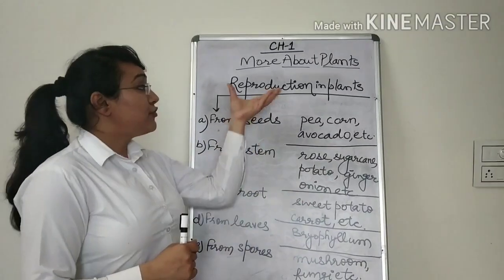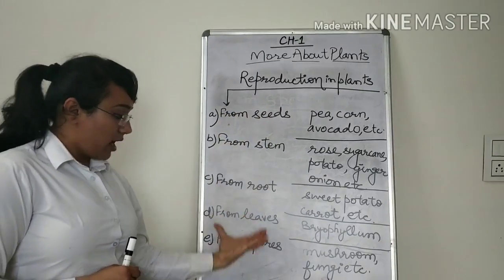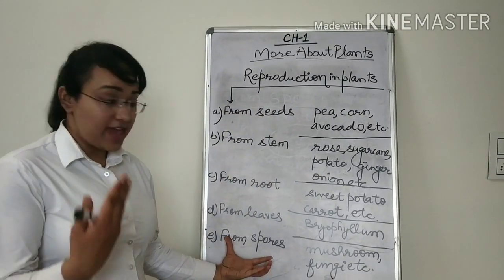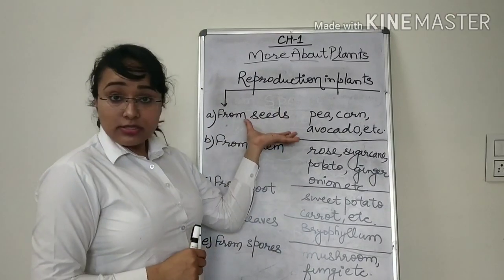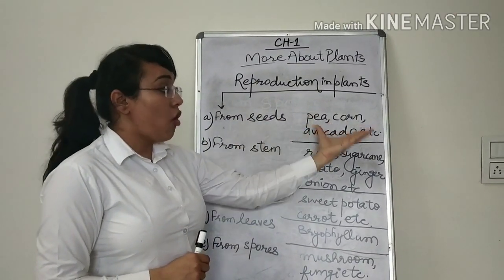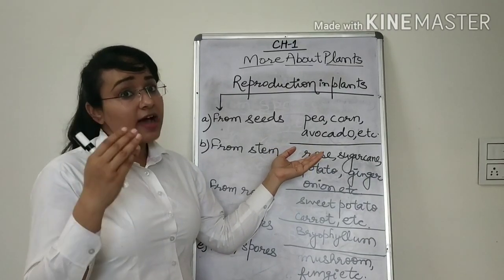So my dear children, reproduction in plants, as we have seen, can be done in these five ways. The first way is from seeds. Examples of from seeds are pea, corn, avocado, and many more. All the fruits that have seeds in them.